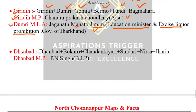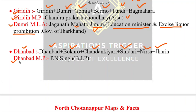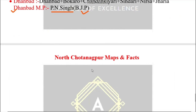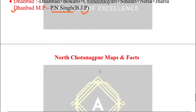Now let me tell you about Dhanbad Parliamentary Constituency. Dhanbad Lok Sabha constituency consists of the Assembly constituencies: Dhanbad, Bokaro, Chandankiyari, Sindri, Nirsa, and Jharia. The Member of Parliament from Dhanbad is PNC, who belongs to BJP. That covers the maps of Chhota Nagpur.